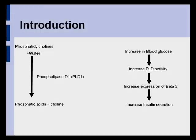When glucose enters the bloodstream, it causes the beta cells within the islet of Langerhans, which are located in the pancreas, to secrete insulin. The higher the concentration of glucose present within the bloodstream, the more insulin will be secreted in order to lower the blood glucose level to a normal level. This article investigates whether phospholipase D1 (PLD1) is involved in glucose-induced insulin secretion, as well as investigating the kinds of intracellular signals that are related to PLD1 in pancreatic beta cells.